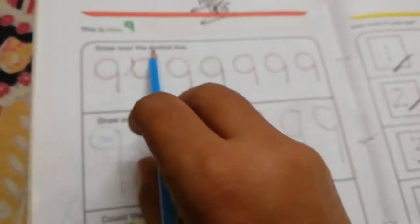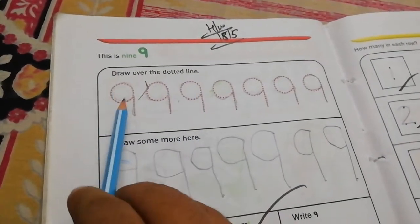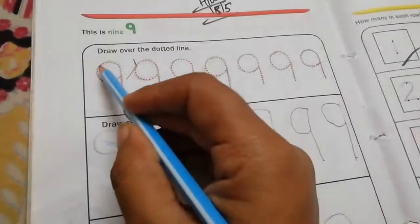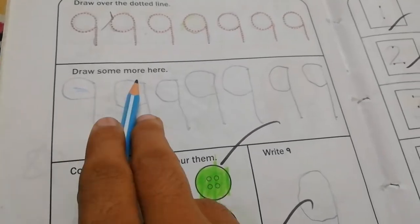Draw over the dotted line. This is number 9. Draw over the dotted line. Dear student, you also draw on the dotted line. Make a number 9. Draw some more here.